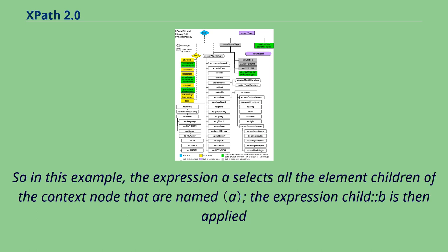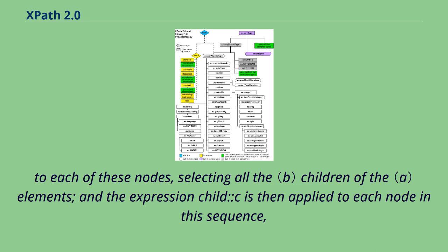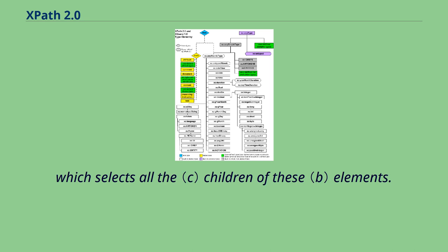So in this example, the expression a selects all the element children of the context node that are named a. The expression child::b is then applied to each of these nodes, selecting all the b children of the a elements, and the expression child::c is then applied to each node in this sequence, which selects all the c children of these b elements.